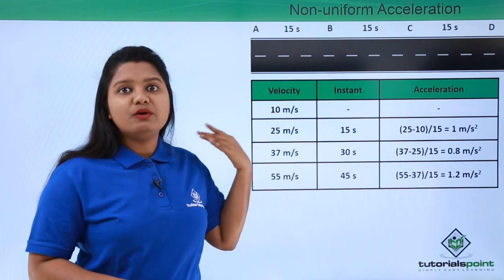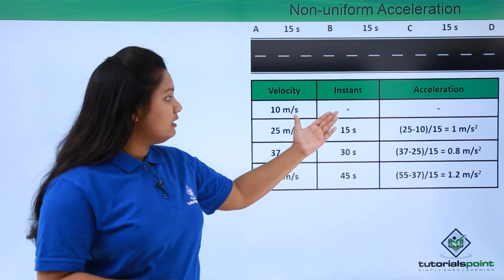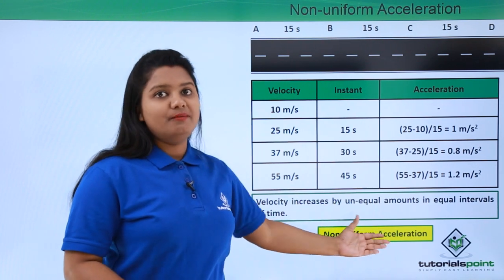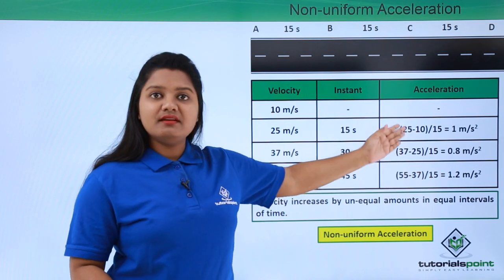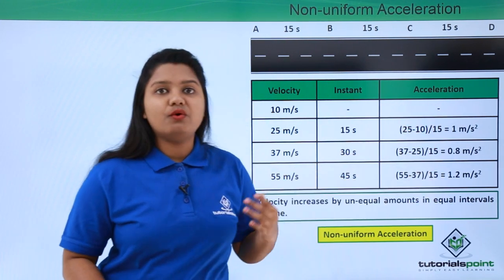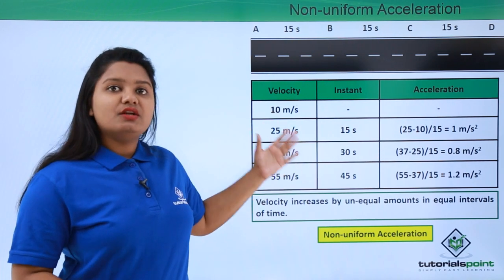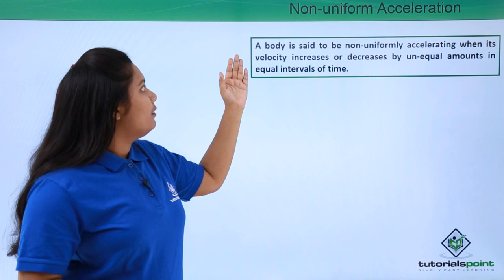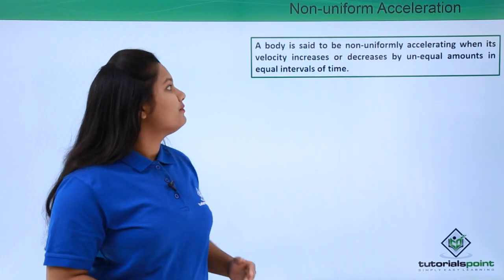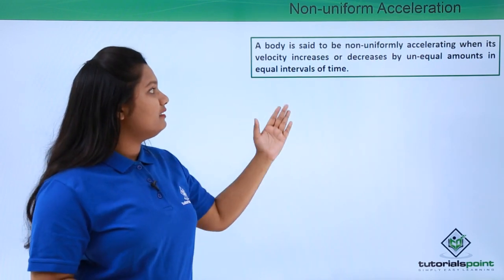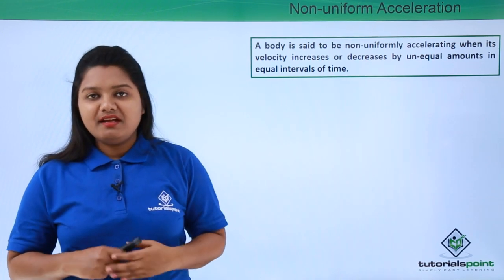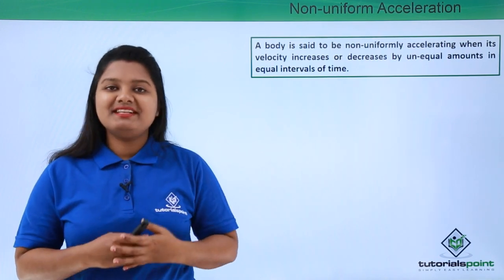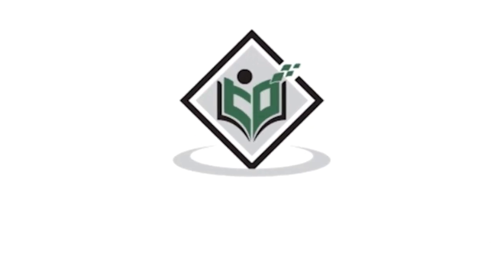In this case we see that the velocity is increasing, but not by equal amounts — it is increasing by unequal amounts in equal intervals of time. Such motion is associated with non-uniform acceleration. When we calculate the accelerations in all three cases we find their values to be different. We define non-uniform acceleration as: a body is said to be non-uniformly accelerating when its velocity increases or decreases by unequal amounts in equal intervals of time. Thanks for watching TutorialsPoint.com — Simply Easy Learning.